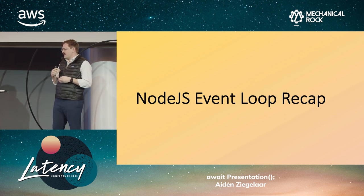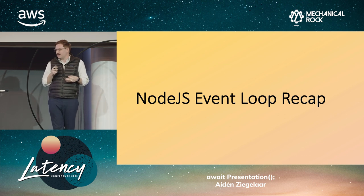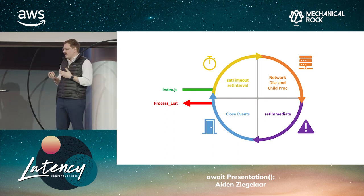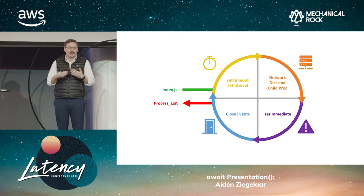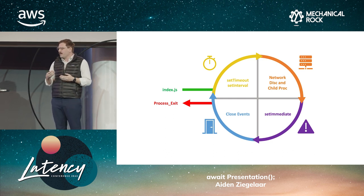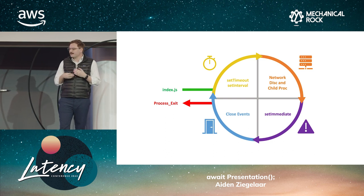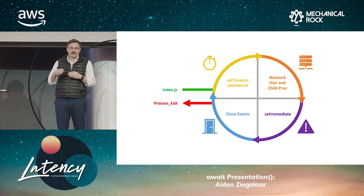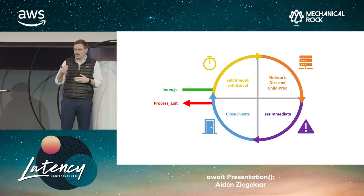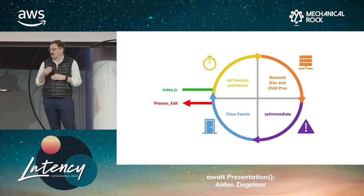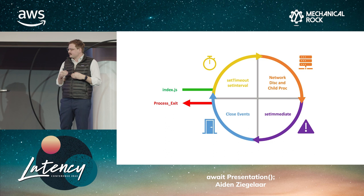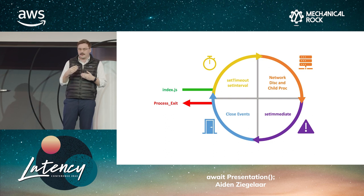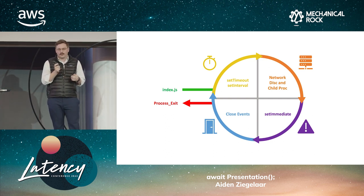Let's do a bit of a recap with what you might have seen before. We'll take a look at a simplified version of the Node.js event loop. We have our entry point, index.js, where we run our JavaScript that sets up the initial events and workloads. We then enter the event loop and run any scheduled timers. We then move on to processing callbacks registered with any external events — so that might be network, disk, or child processes. Then we process callbacks registered with setImmediate. Finally, we process our close events and repeat this process as long as there's outstanding work to do, then exit our process.